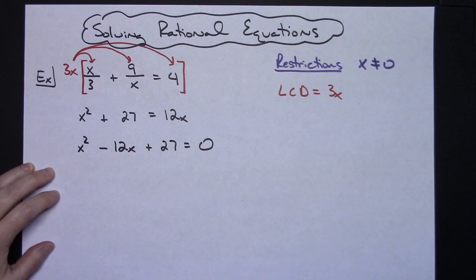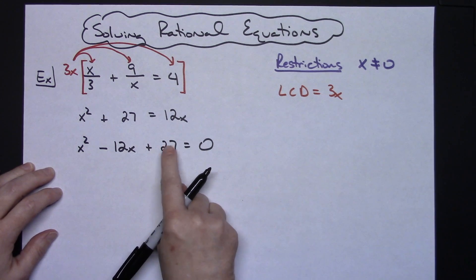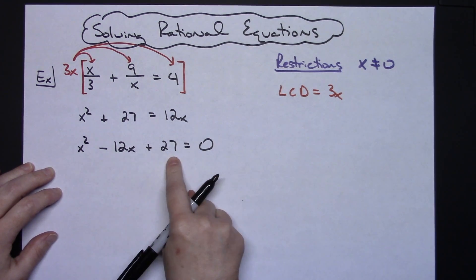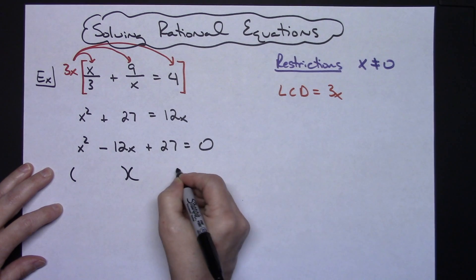Now this is in a form that I can look at and decide if it factors or whether or not I'm going to need quadratic formula. Things that multiply to 27 but add to a negative 12 looks to me like I can use 3 and 9. So this one is going to be one that can factor.